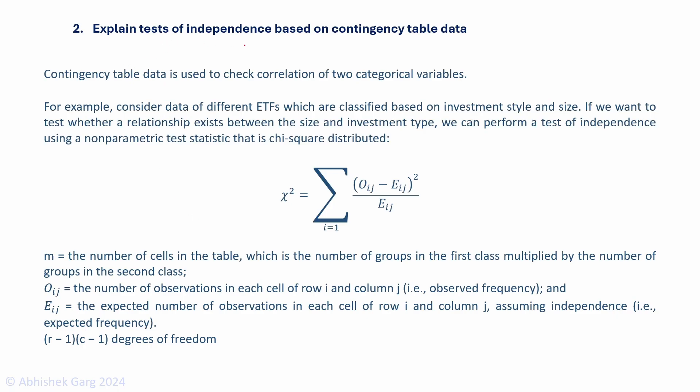Explain tests of independence based on contingency table data. A contingency table is used to check correlation of two categorical variables. We are testing the independence of one category with respect to the other. For example, we have data of different ETFs which are classified based on investment style and size. We want to test whether the investment style depends upon the size or vice versa. We'll use a chi-squared distributed test statistic.